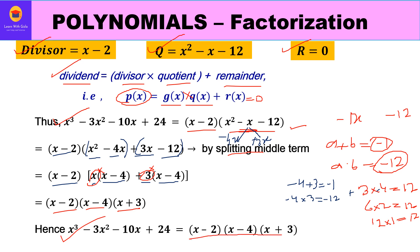So the three factors are (x - 2), (x - 4), and (x + 3). This method is known as factor method followed by long division method, then splitting the middle term. We wanted three factors because it's a cubic polynomial of degree 3.